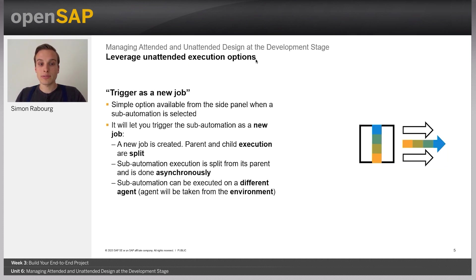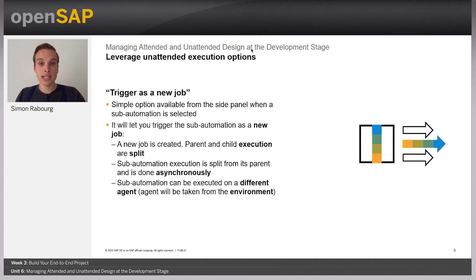So let's now talk about that feature: the Trigger as a New Job option. This is a simple option available on the automation side panel when you have selected your sub automation step in the automation flow. It will let you trigger the sub automation as a new job so that a new job will be created. The parent execution will be split from the child execution, so that the sub automation will be run asynchronously. And if you leverage that, you could also make the sub automation executed by a different agent.